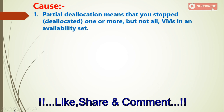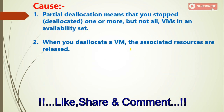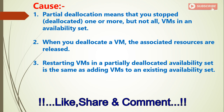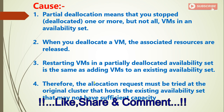First, you should understand what the reason is. The first reason is partial deallocation — meaning you stopped or deallocated one or more but not all virtual machines in an availability set. If you have an availability set with multiple virtual machines and you stopped or deallocated some but not all machines, when you deallocate a virtual machine the associated resources are released. Restarting a virtual machine in a partially deallocated availability set is the same as adding a virtual machine to an existing availability set. Therefore, the allocation request must be tried at the original cluster that hosts the existing virtual machine set, which may not have sufficient capacity.